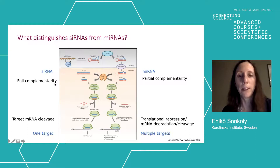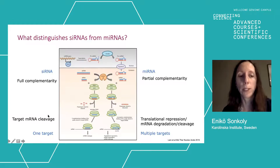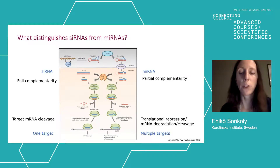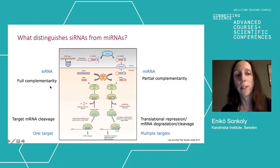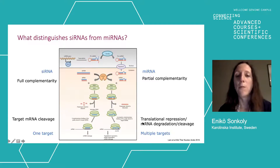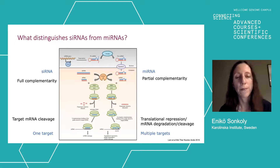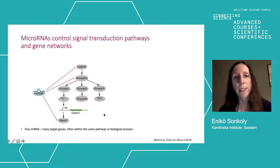Another important consequence of siRNA full complementarity is that they regulate one specific target — which is what we want in experiments. MicroRNAs, on the other hand, have multiple targets. Since it's only partial complementarity, they bind to multiple targets simultaneously. Because they bind to multiple targets, they can control signal transduction pathways and gene networks very efficiently. Typically one microRNA regulates each target in a mild way, but since they regulate several genes within the same pathway, the net effect on the pathway will be very significant.